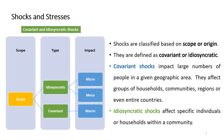Idiosyncratic shocks are more specific — they happen at a micro or meso level. The micro level means at the household or individual level; the meso level refers more to the community level. So idiosyncratic shocks affect mainly specific individuals or households within a given community. As shown in the diagram, covariant shocks have their impact more at a macro level, while idiosyncratic shocks are mainly at a micro or meso level.